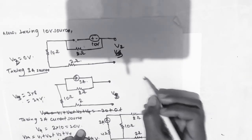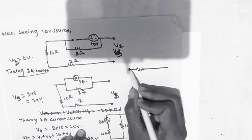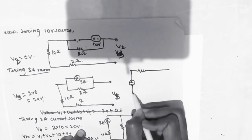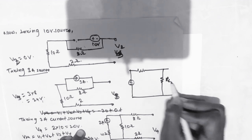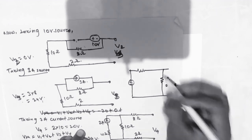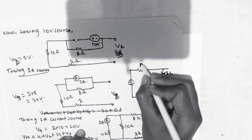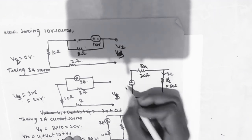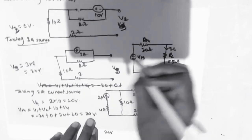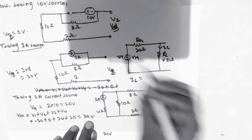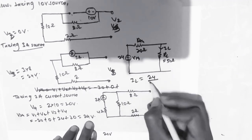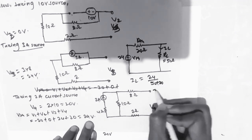Hence the Thevenin's equivalent circuit has RTS of 20 ohms, VTS of 24 volts, and RL of 50 ohms. To calculate the load current IL: IL equals 24 upon (20 plus 50), which gives 0.343 amperes.